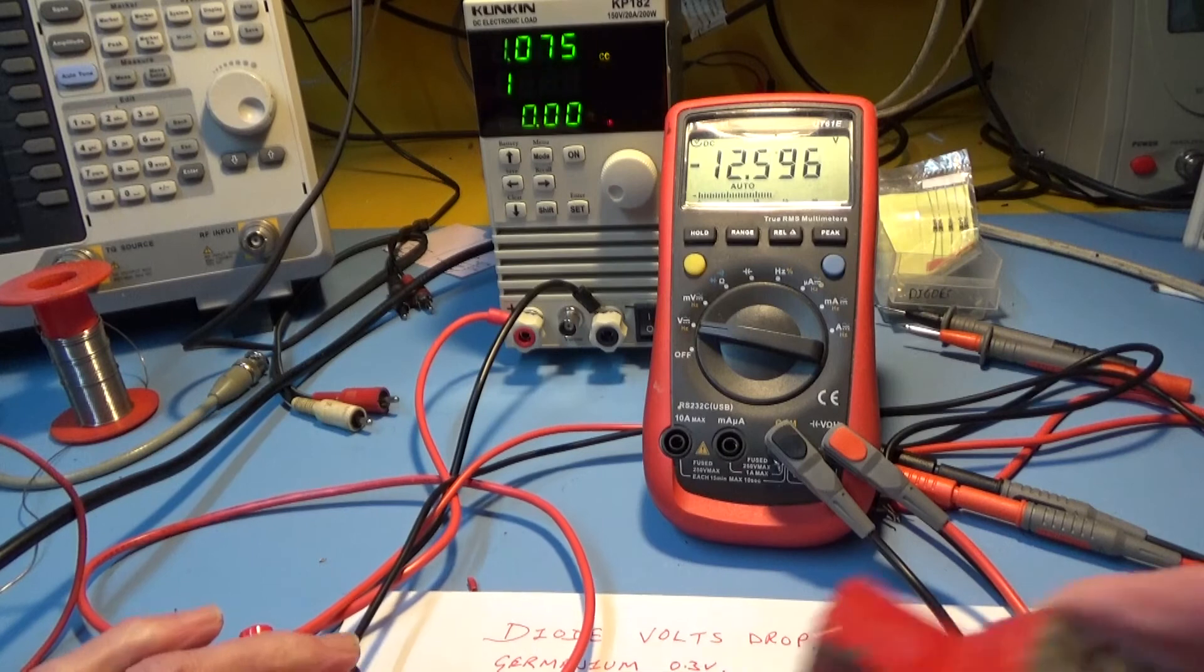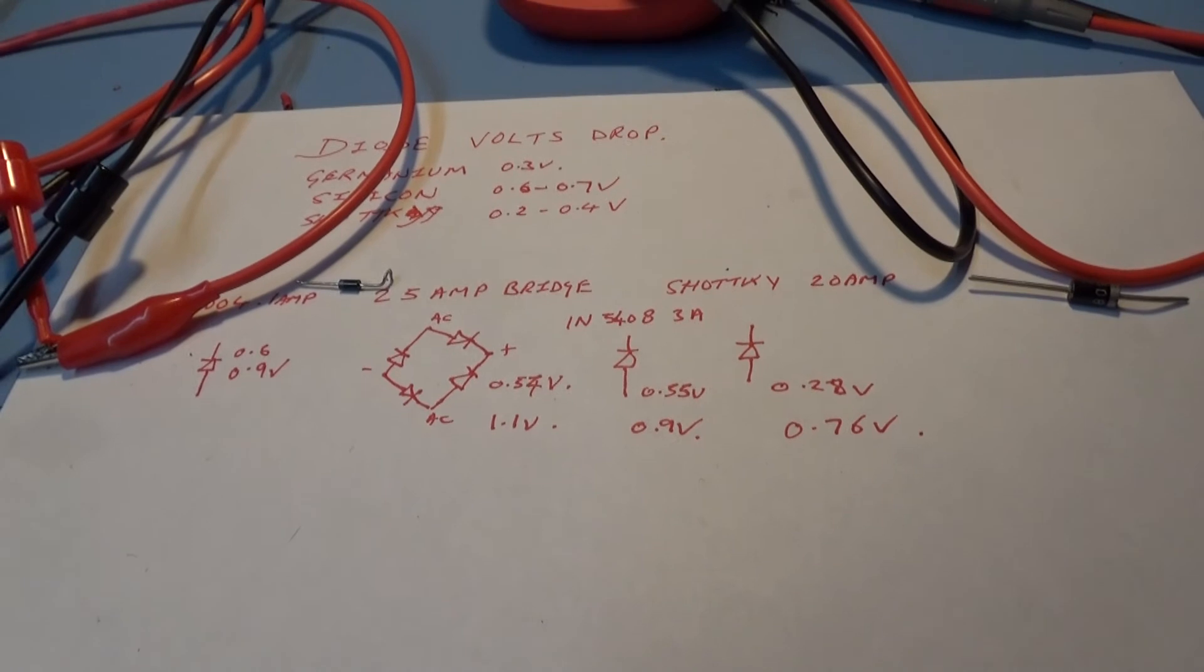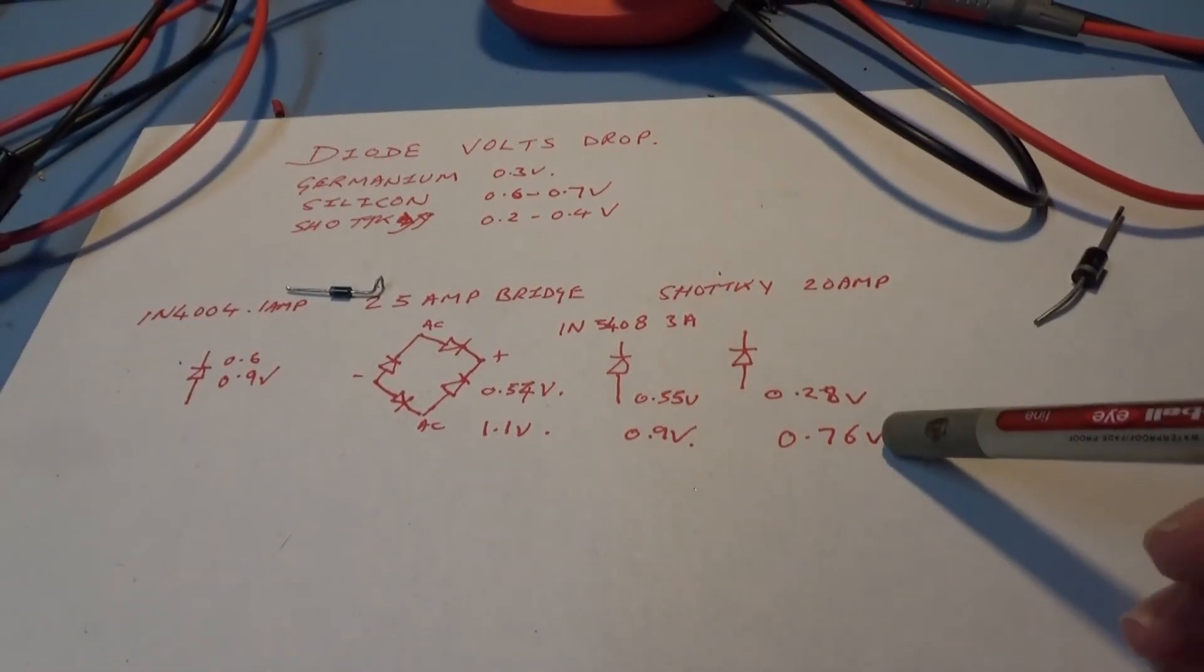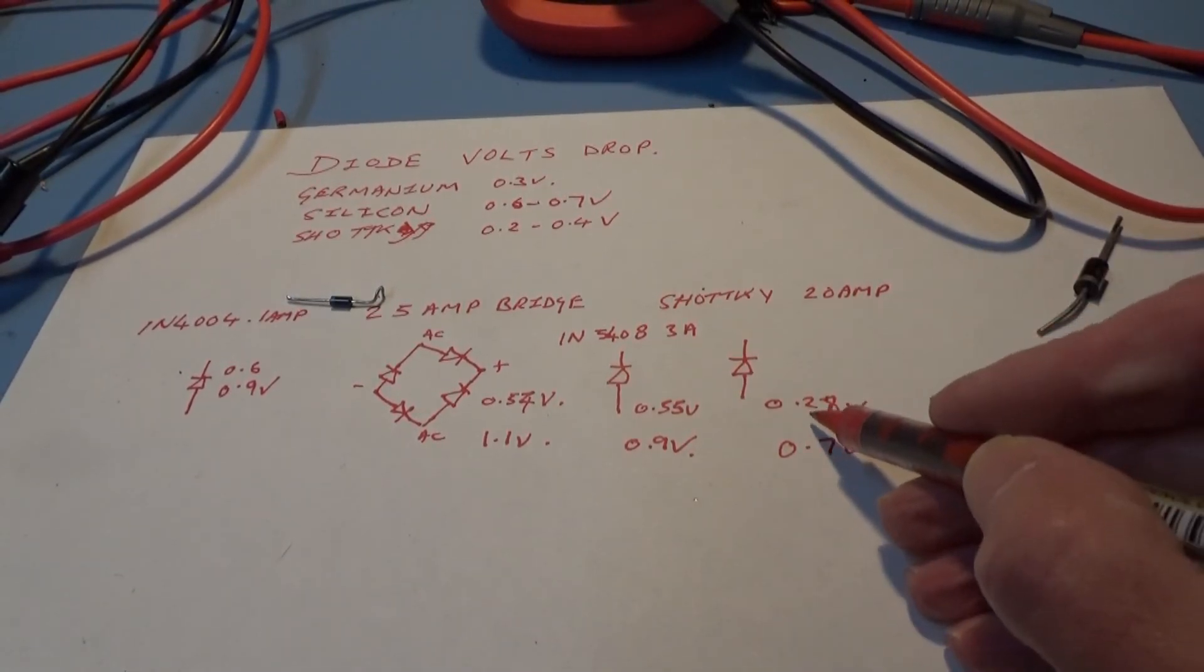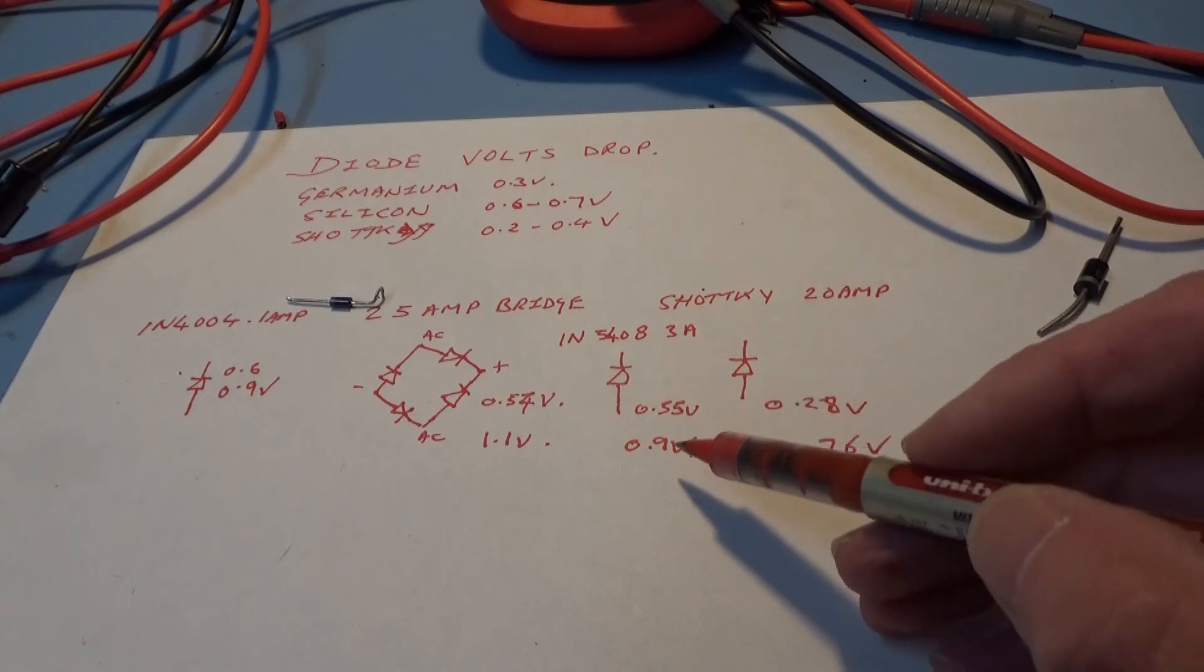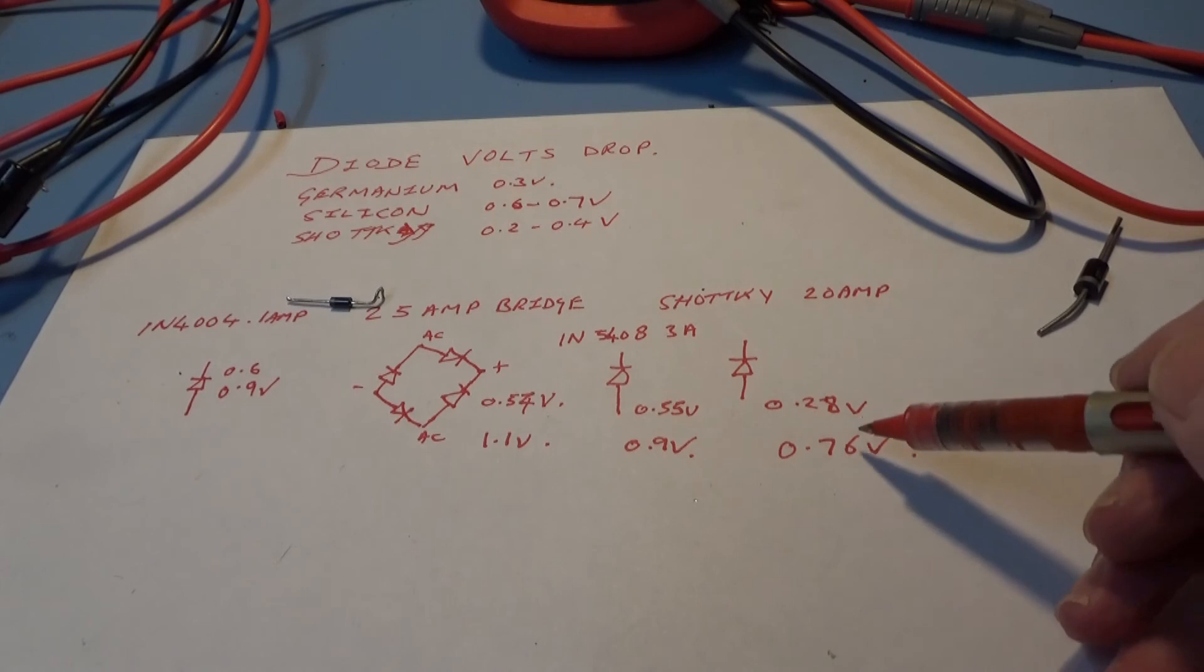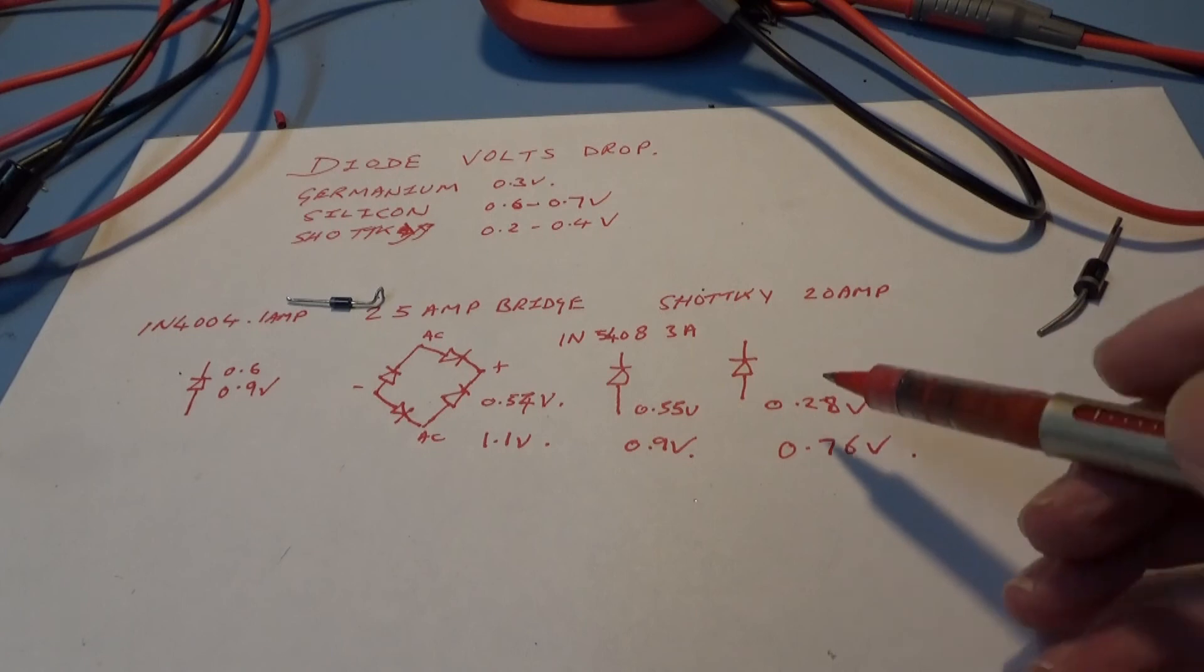So what can we conclude from all this? The most interesting one was the Schottky diode which is a 20 amp diode. You can see it's a massive difference between 0.2 I was measuring on the diode test on the multimeter to 0.76 volts, but it's still a lot lower than the silicon.